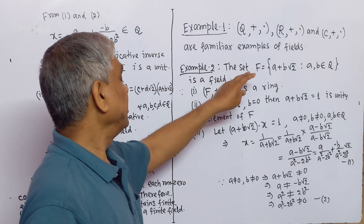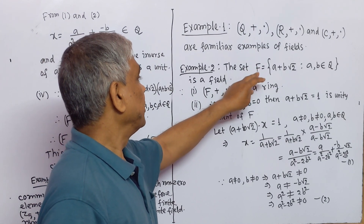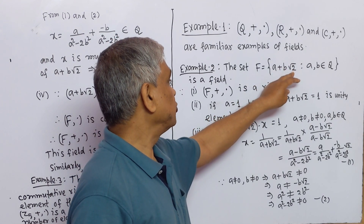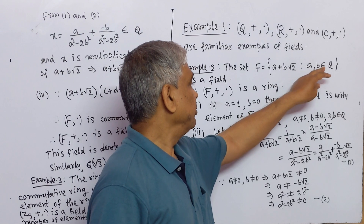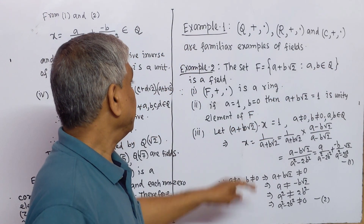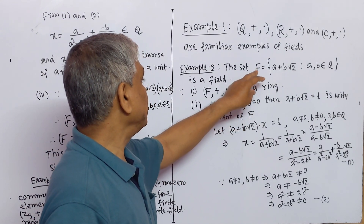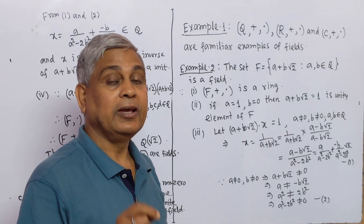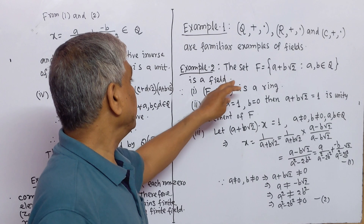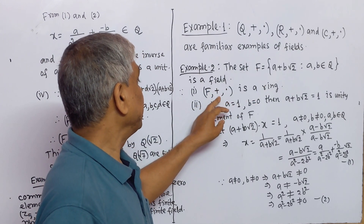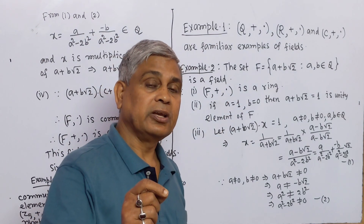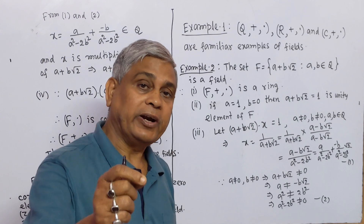Example 2: The set F containing elements of the form a + b·√2, where a, b belong to Q (a, b are rational numbers). We have to show that F with binary compositions addition and multiplication is a field. Since F with these operations is a ring, it fulfills the properties of a ring.